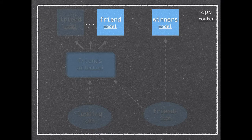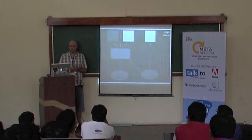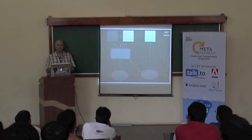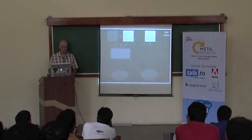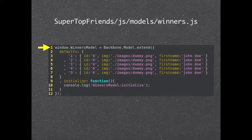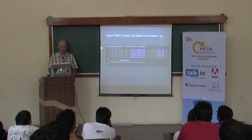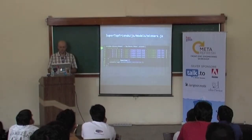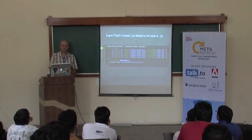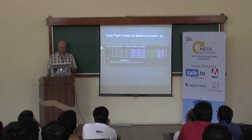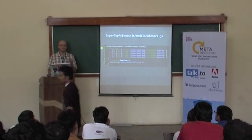Let's analyze this application. We have two data models. We have the friends — each friend has a picture, a name, a Facebook ID. And there is also a Winners model. This Winners model represents the five best friends. The Winners model just extends Backbone.Model. Inside, I can define default values for the data stored inside. This is not mandatory but it's good practice, so you know what kind of data you store. You can see I have my five best friends with some default values. I also want to initialize the function.